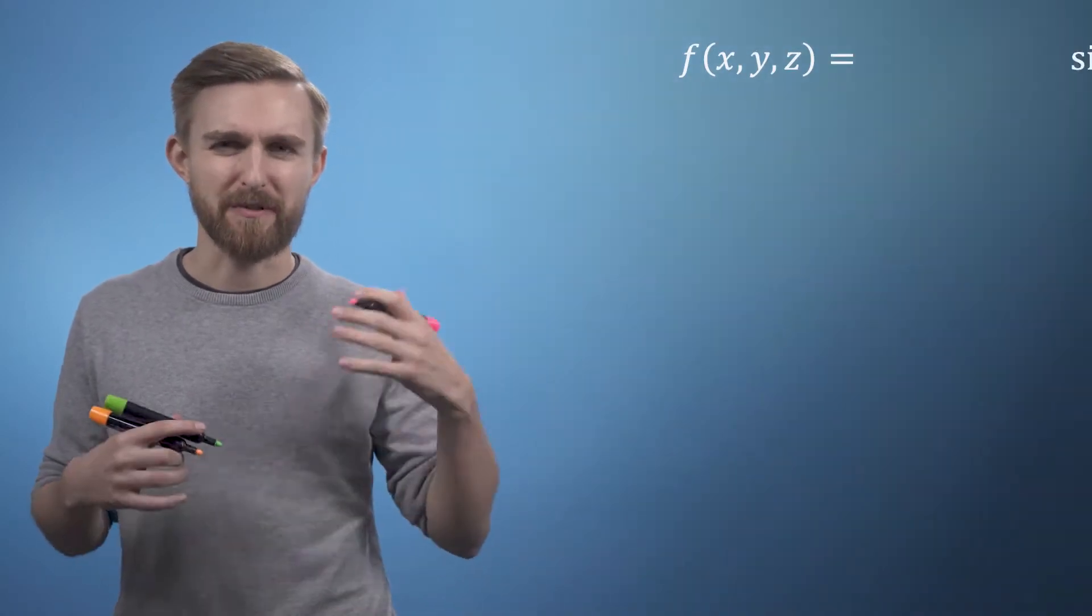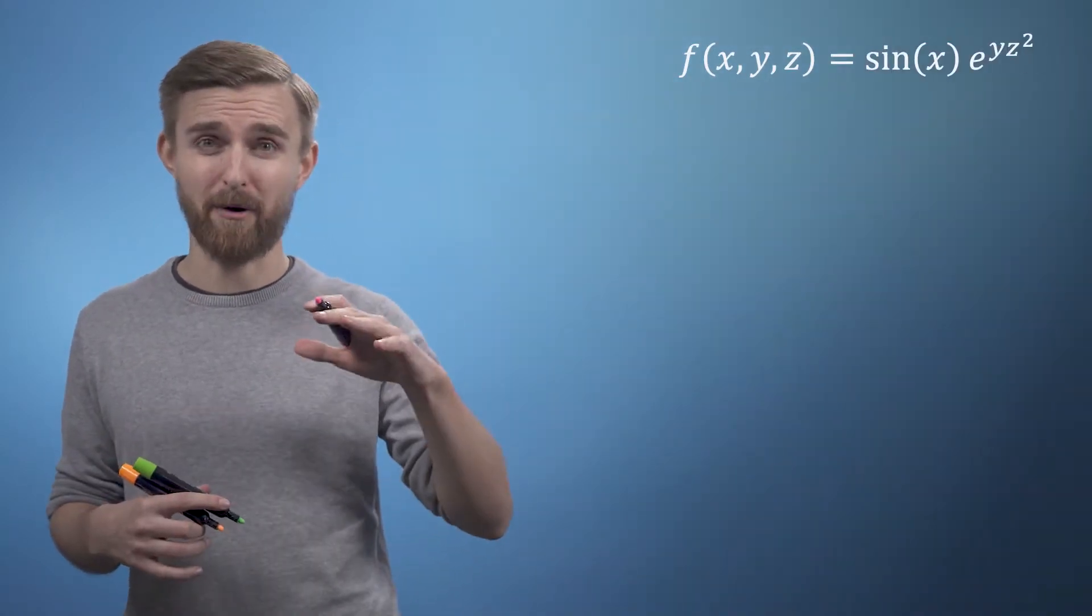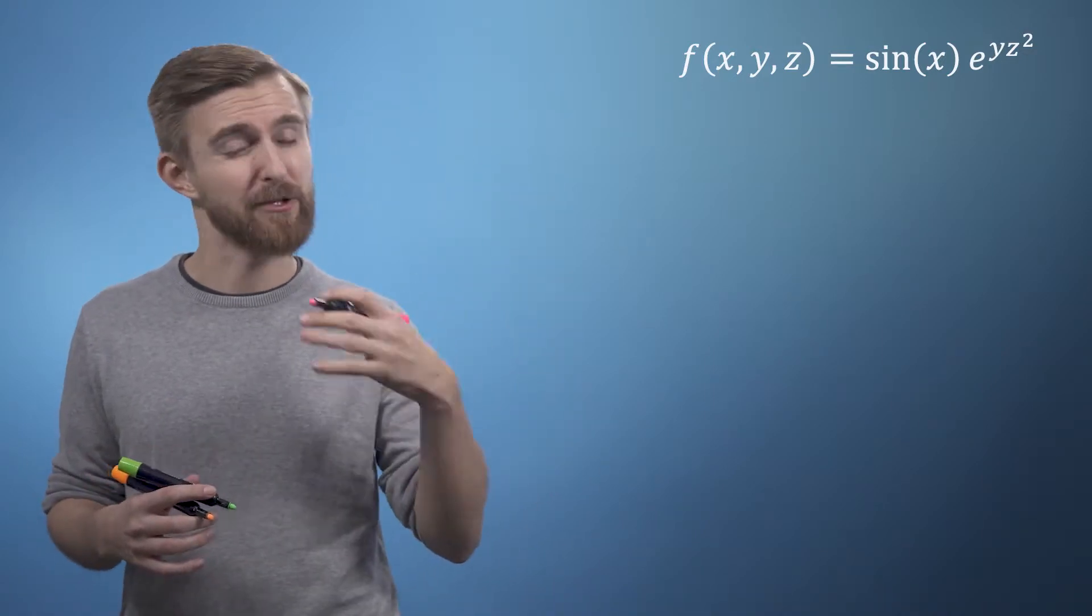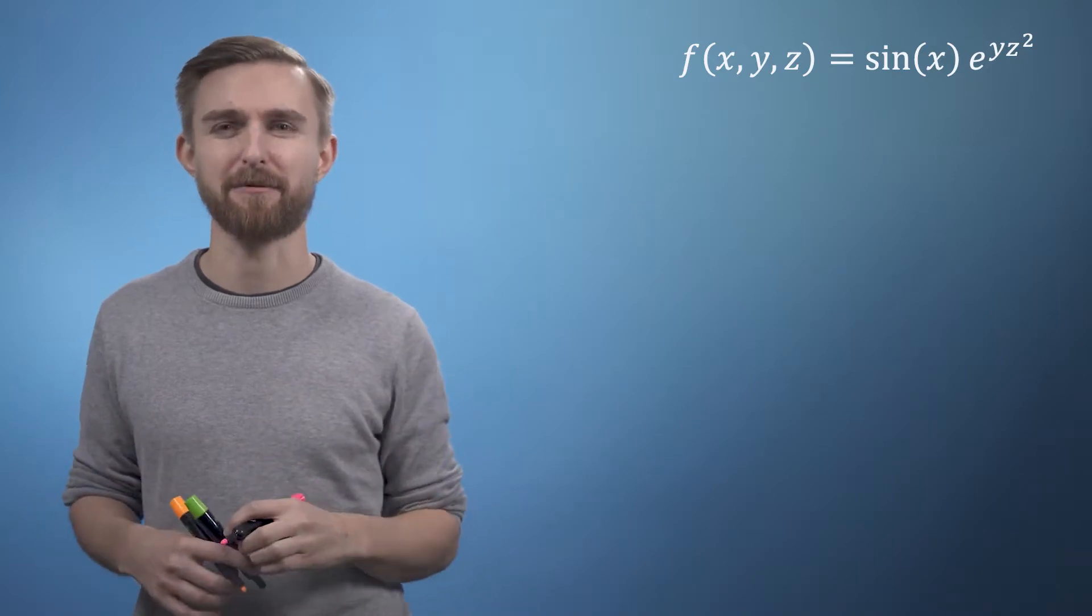Consider the function f of x, y, and z equals sine of x e to the power of y z squared. We're now just going to work through and find the derivatives with respect to each of these three variables.